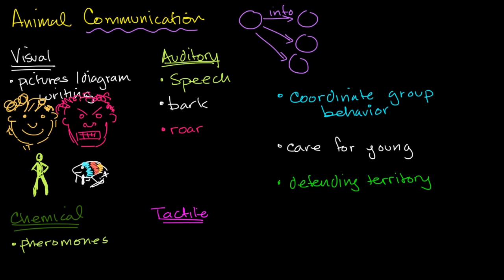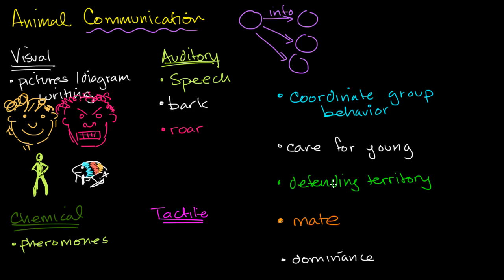A very significant use of communication throughout the animal world, even in humans, is finding a mate. When someone drives a fancy sports car, it's probably more than needed to get from point A to point B, but it might signal something to potential mates — earning power or status. Related to that is signaling dominance, which might be for a potential mate, to defend your territory, or to indicate that you should be the one coordinating the group's behavior.